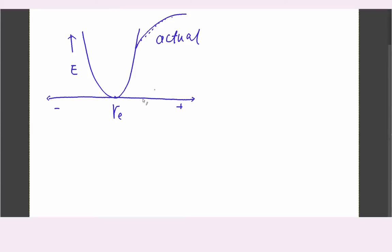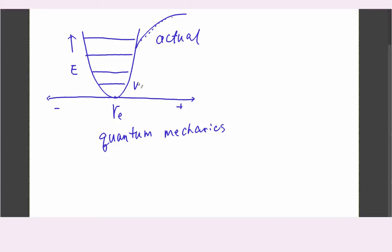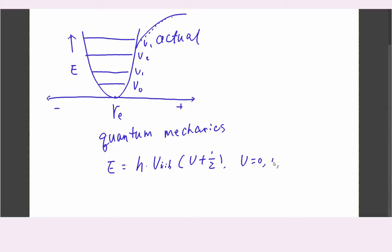So to predict the energy of the vibration, we need to use quantum mechanics. In quantum mechanics, we divide this vibration into several levels and we name it the quantum vibration number. The energy equals Planck's constant times the vibrational frequency times the sum of the quantum vibration number plus 0.5.